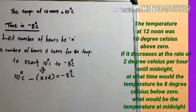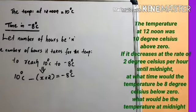The temperature at 12 noon was 10 degree Celsius above 0. If it decreases at the rate of 2 degree Celsius per hour until midnight, at what time would the temperature be 8 degree Celsius below 0? And what would be the temperature at midnight?